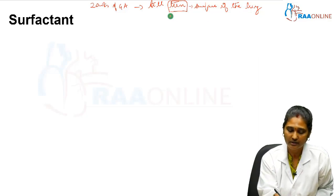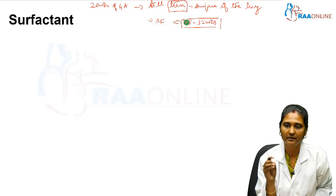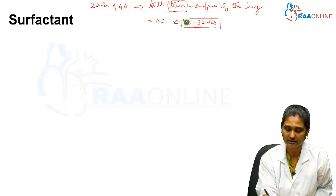Surfactant is seen in the amniotic fluid by approximately 28 to 32 weeks of gestation. Between 28 to 32 weeks you can detect surfactants in the amniotic fluid, but mature levels only after 35 weeks.